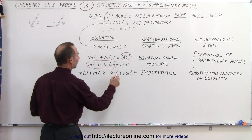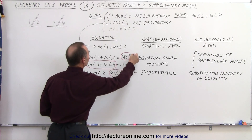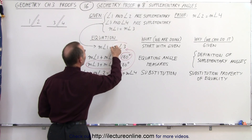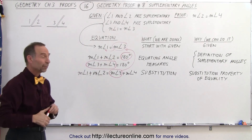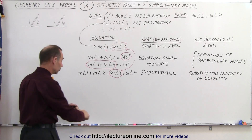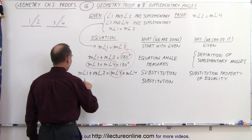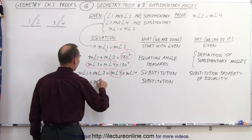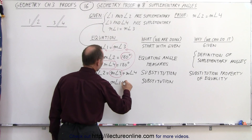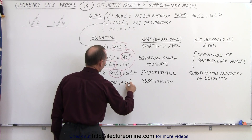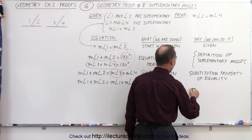We take the measure of angle 3 and substitute it with what it is equal to — the measure of angle 1. Therefore, we can write that the measure of angle 1 plus the measure of angle 2 equals the measure of angle 1 plus the measure of angle 4. Again, this is justified by the substitution property of equality.